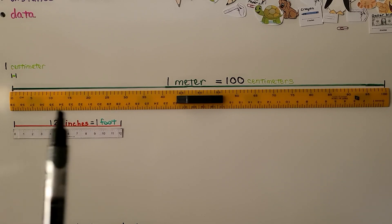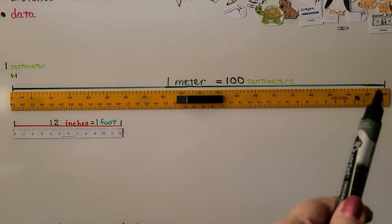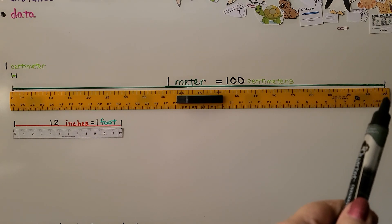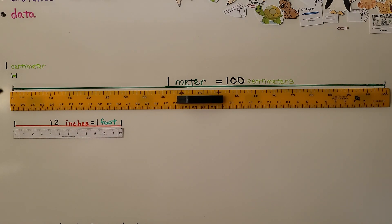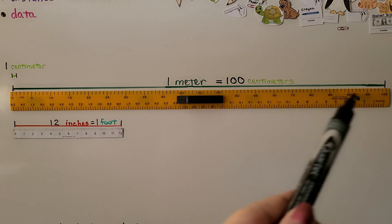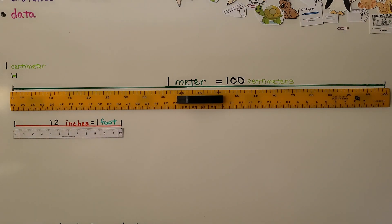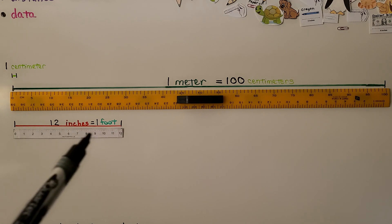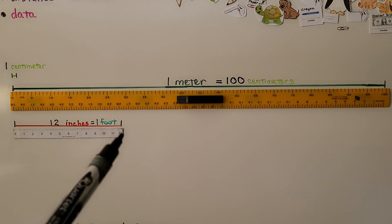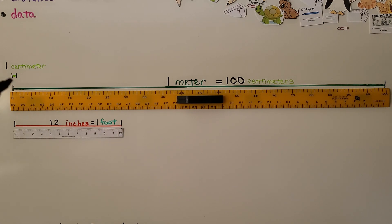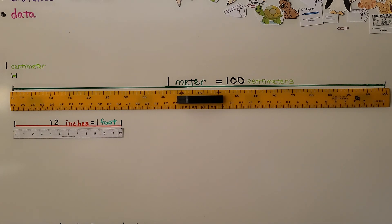So here is my meter stick. You can see it's 100 centimeters — each little mark here is a centimeter, so this little green length is 1 centimeter. This meter stick is 100 centimeters. You can compare it to 12 inches, which is equal to 1 foot, and you can see how small a centimeter is and how long a meter is.